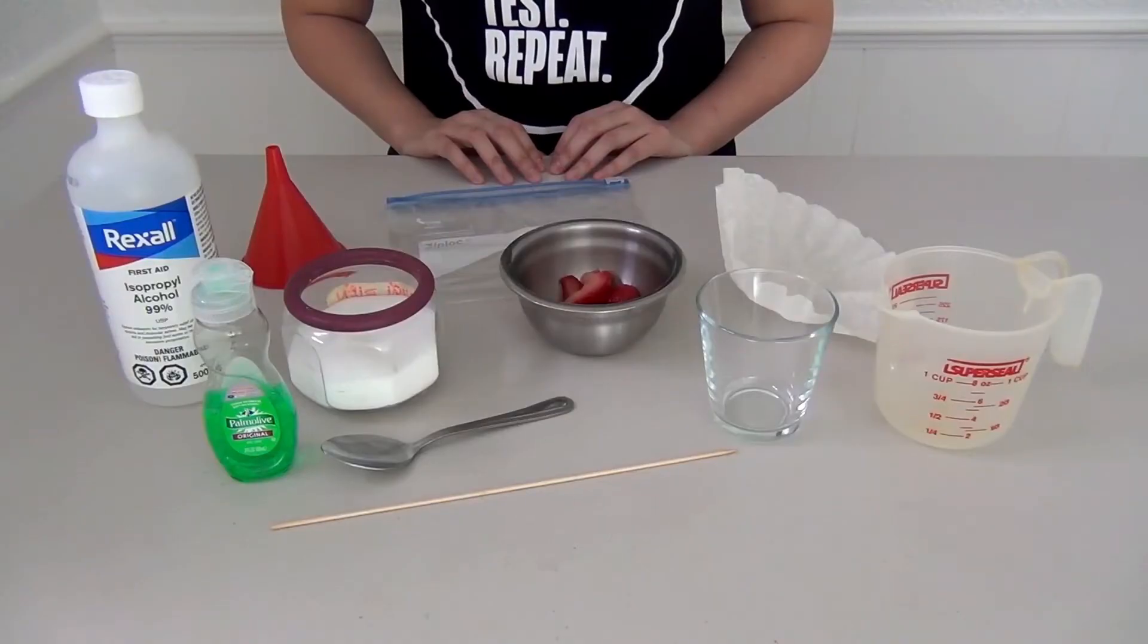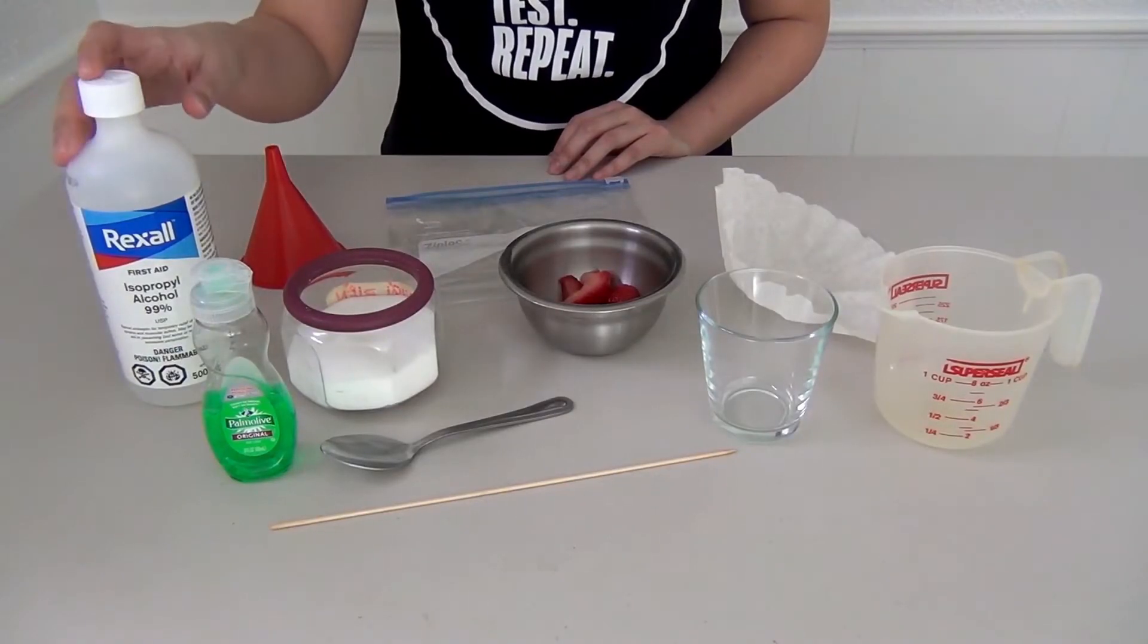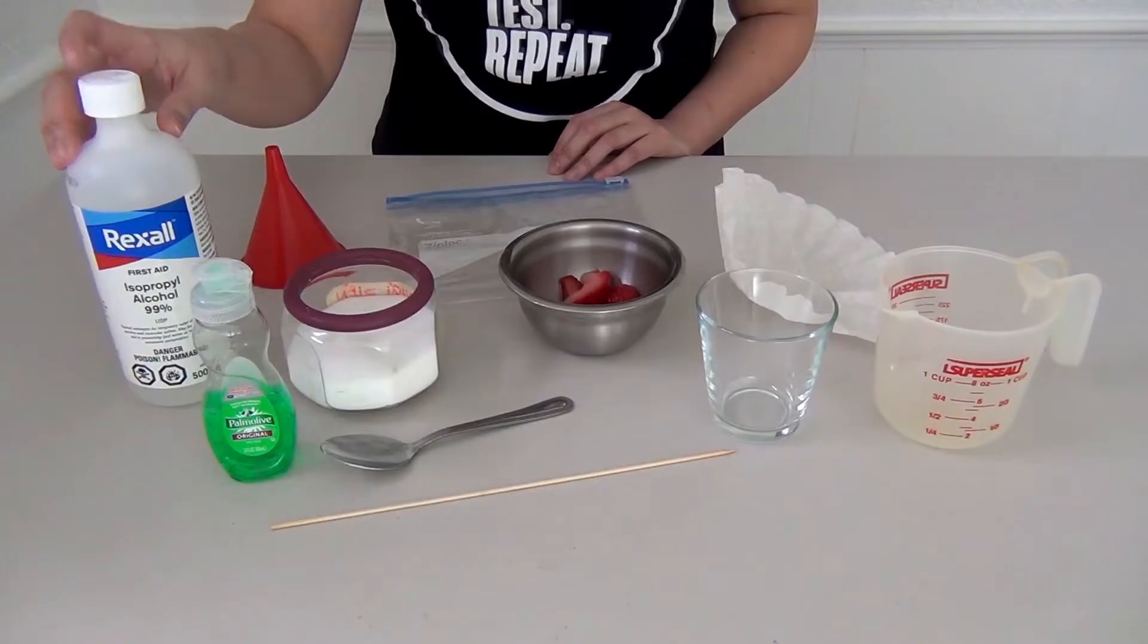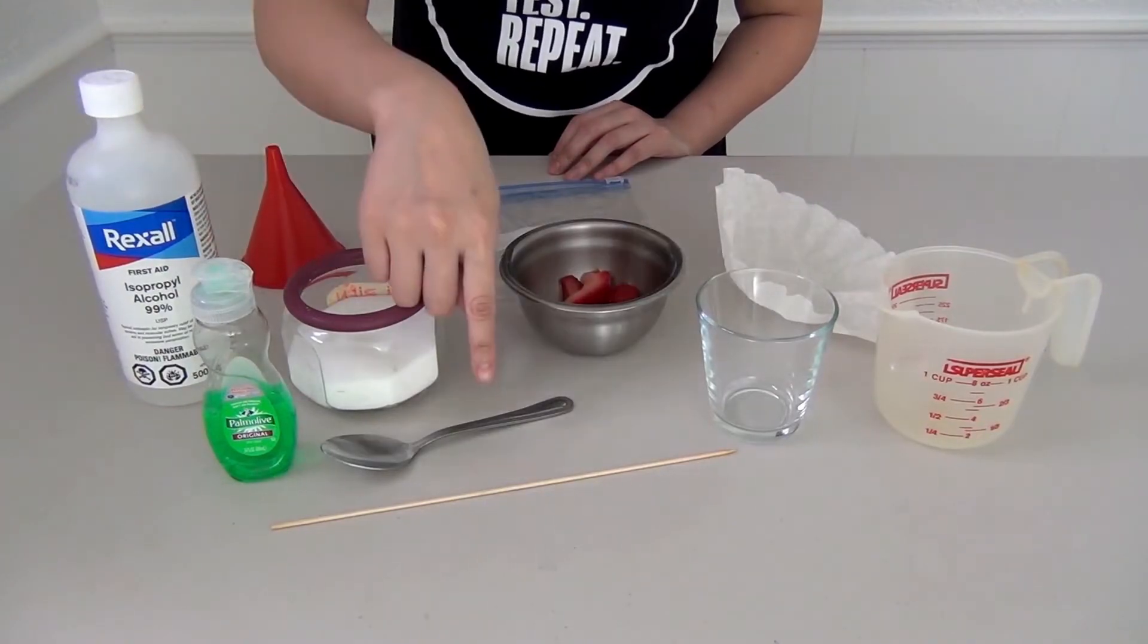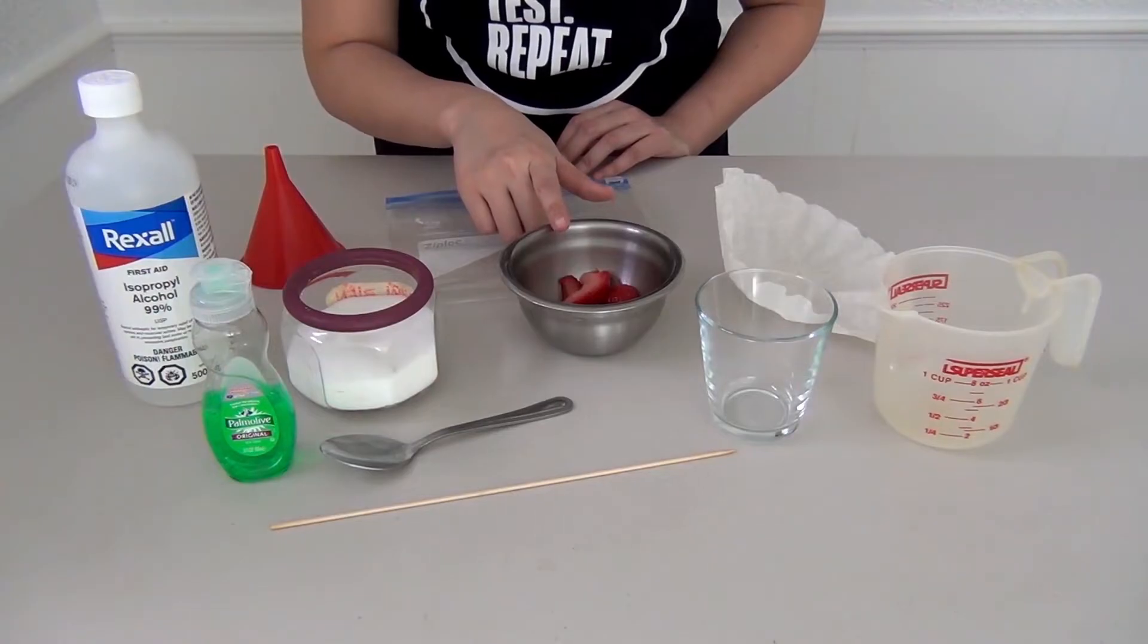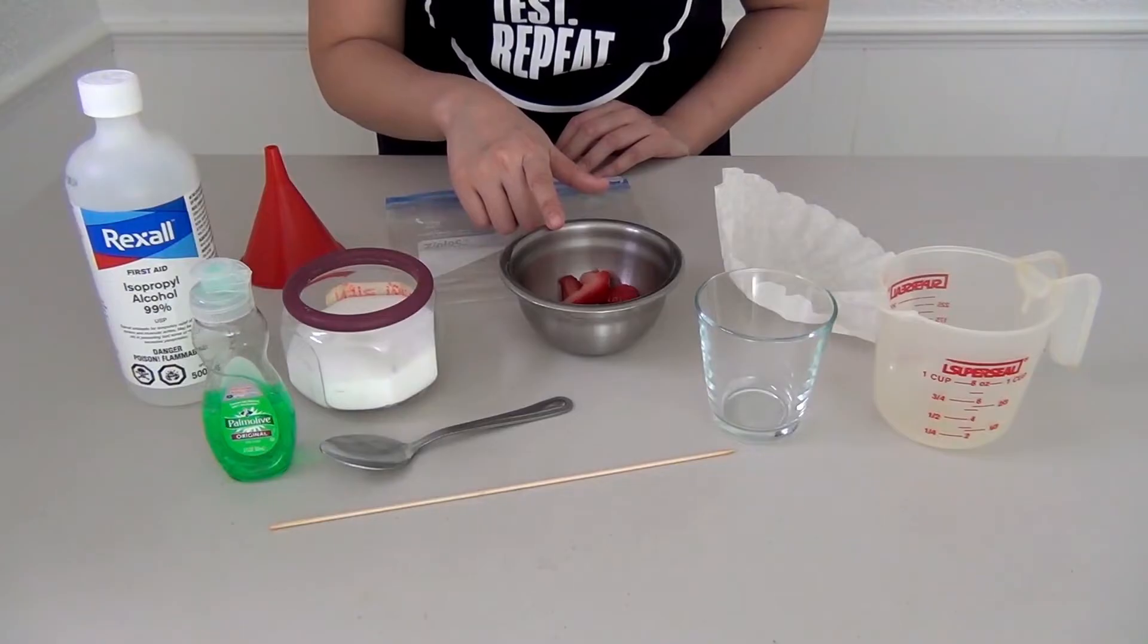For DNA extraction at home, you will need alcohol. You can use isopropyl or rubbing alcohol. If you don't have that, you can use something that has a high alcohol content. Liquid dish soap, salt, spoons, a skewer or toothpick, something that has DNA in it. You can use a lot of things for this, like frozen or fresh produce. Today I'll be using frozen strawberries.